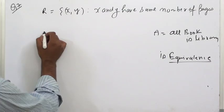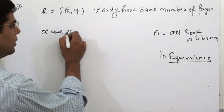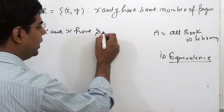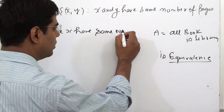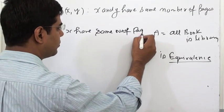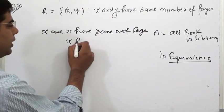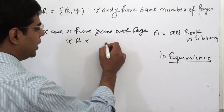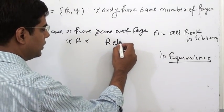Here we can write that X and X have the same number of pages. It means X is related to X. This is how it is reflexive.